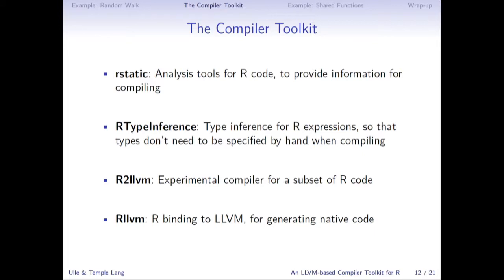Here's an overview of the packages. There's R static for code analysis, R type inference for type inference, and R to LLVM, which is our experimental compiler — and I want to stress that it's experimental. You shouldn't expect that any arbitrary example will just work perfectly; that's not what we're trying to do. But if you do try it out and it doesn't work, please let us know, because we're very interested in getting examples.